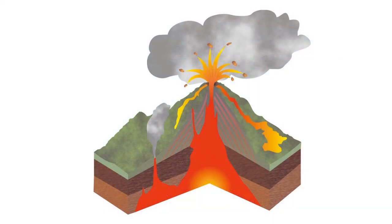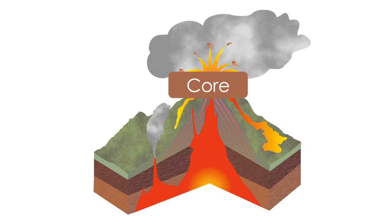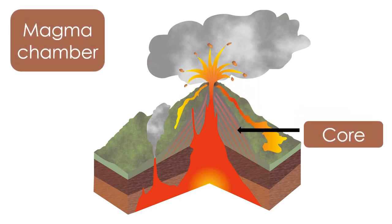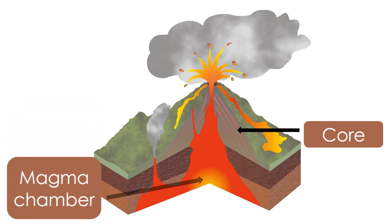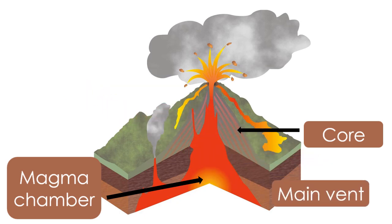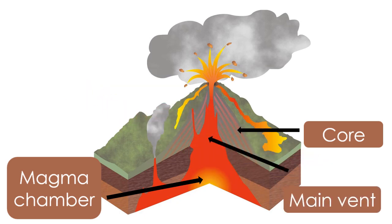Now let's take a look inside a volcano. The main body of the volcano is called the core and is usually made up of layers of cooled lava and ash. A magma chamber sits beneath the volcano under the Earth's crust. In an eruption, the lava will travel through a main vent to reach the Earth's surface.